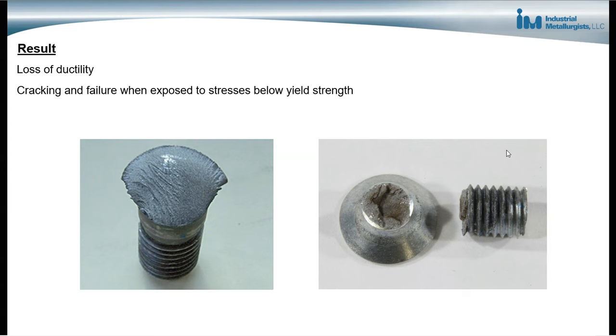The result of the embrittlement is loss of ductility and cracking and failure when the metal is exposed to stresses that are below the metal's yield strength. So we don't see any deformation of the metal when the cracking occurs because the cracking occurs at stresses below the metal's yield strength. These are two examples of fasteners that failed during use due to hydrogen embrittlement.